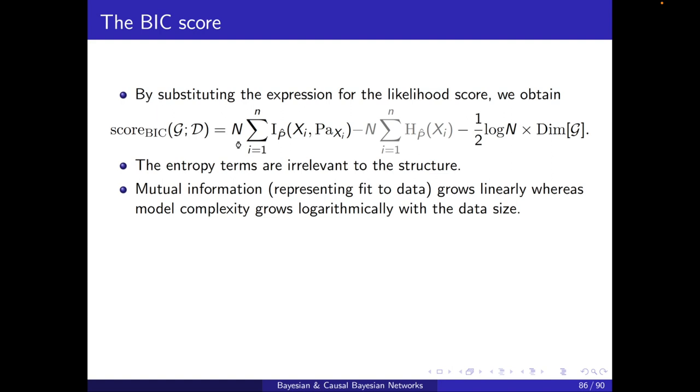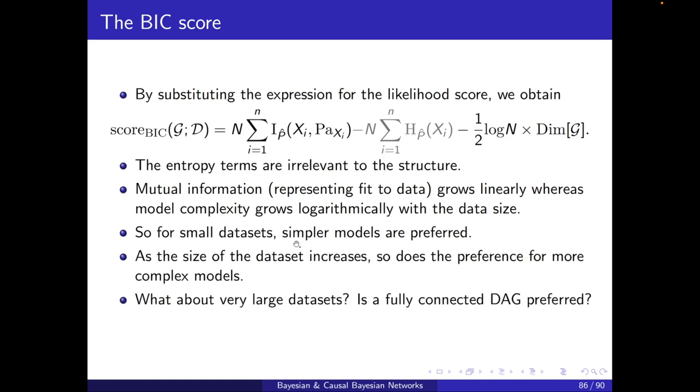So, log(N) here and N here. For small data sets, simpler models are preferred because log of N is greater than N, meaning that it's penalizing more the model. However, when the data size increases, so does the preference for more complex models. Because then this term will go down, and it's with a negative sign. And this one, the goodness of fit, will be preferred.